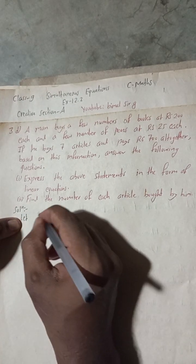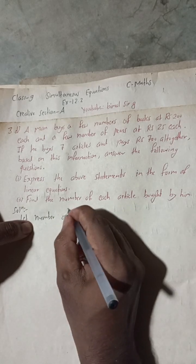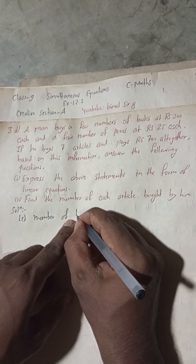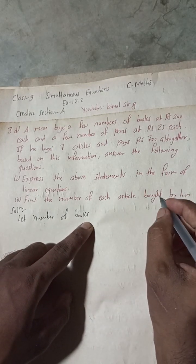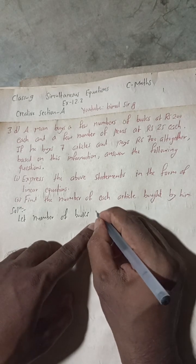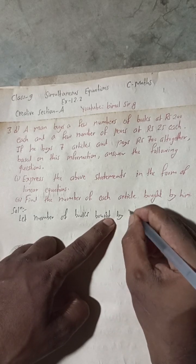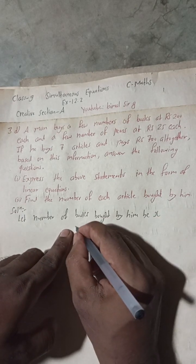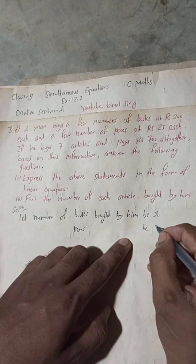We can now suppose here: let the number of books bought by him be x, and the number of pens bought by him be y.